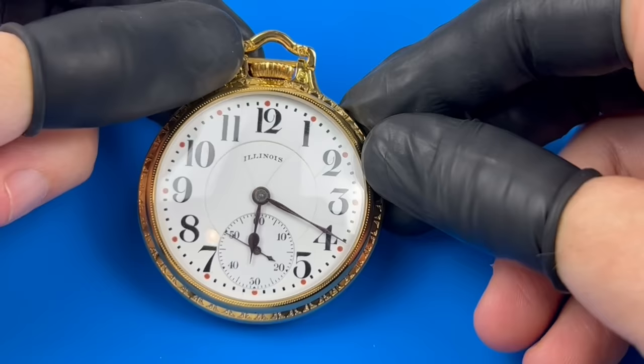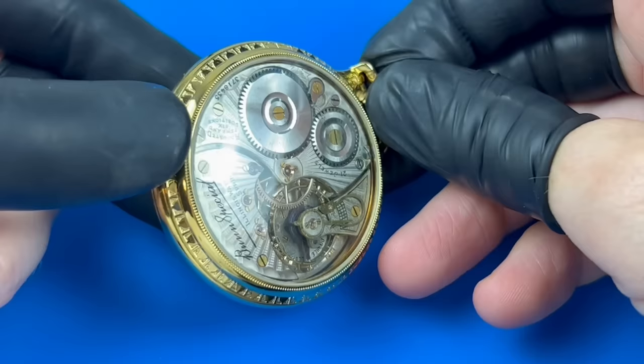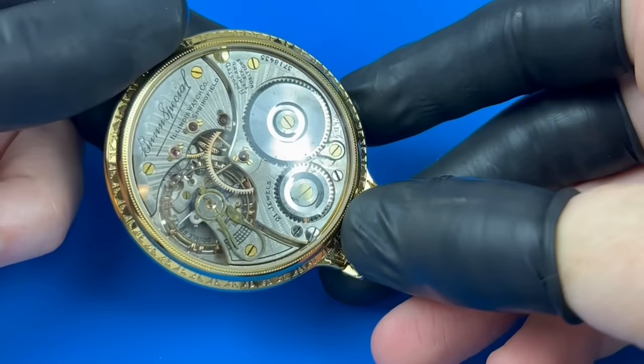Today I'll be servicing the iconic Illinois Bunn Special. This 21-jewel railroad-grade movement, manufactured in 1920, was recased in a classic watch case company gold-plated case which features a salesman-style case back.